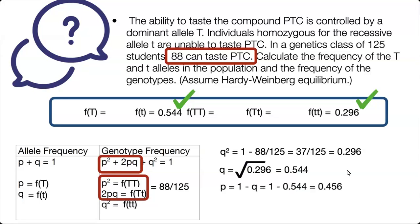Then we know that P plus Q equals 1. By rearranging this equation, we get P equals 1 minus Q. So we can put P up here, which is the frequency of big T. And we've solved both of our allele frequencies.